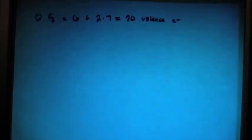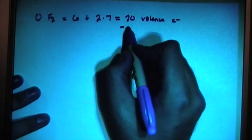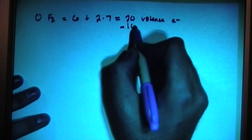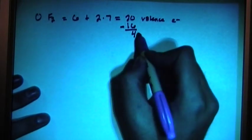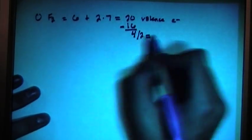Remember what we do for this is we subtract the largest multiple of 8 out of the total, so that's going to be 16. That's going to give us 4 remaining, and then we divide that by 2 to give us the number of lone pairs. So 4 divided by 2 is 2.